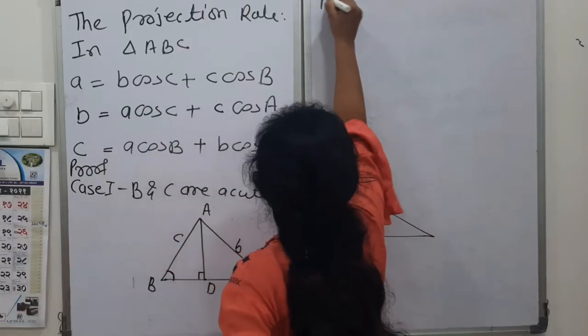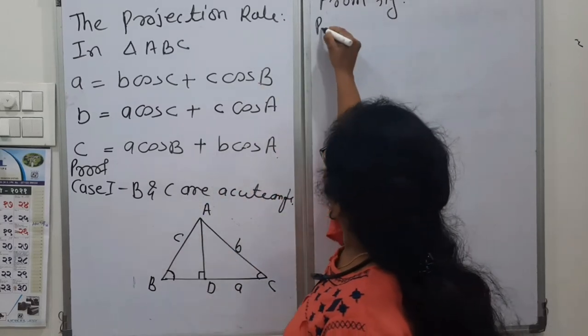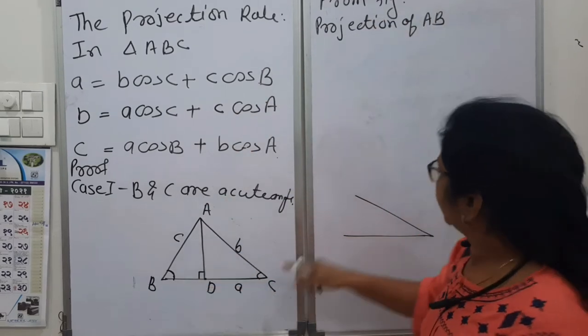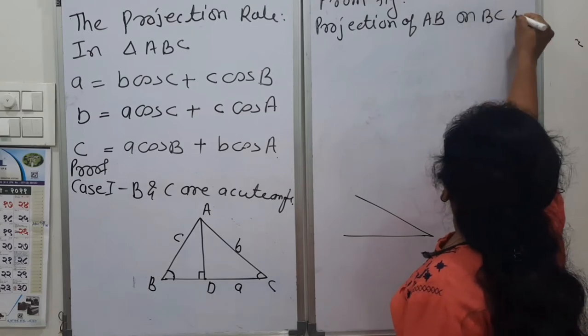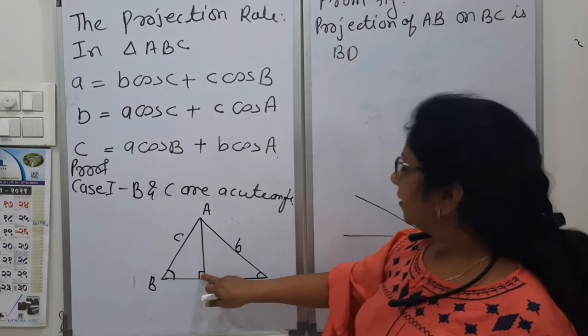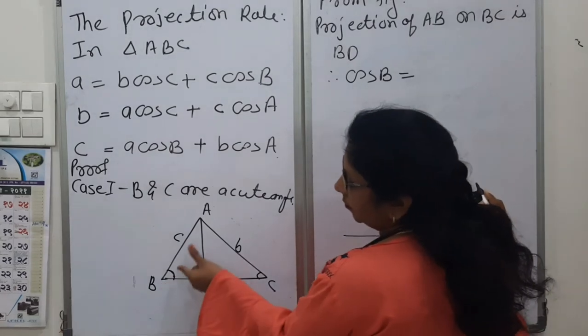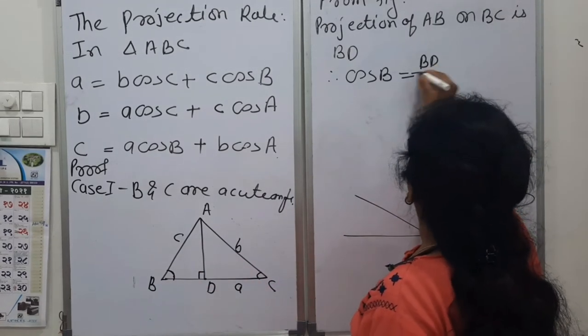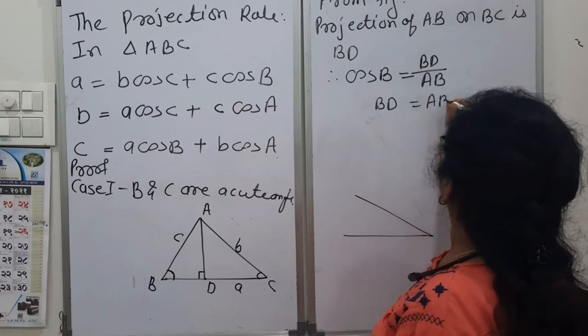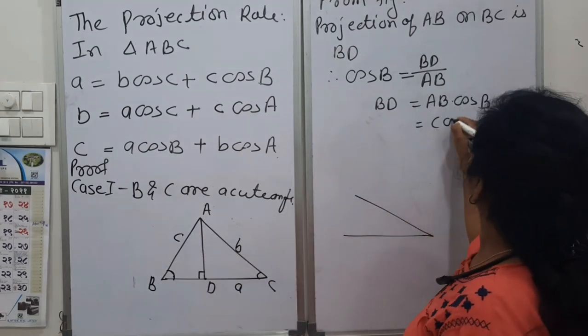So we will write from figure, projection of AB on BC is this BD. And this is an acute angle. This is 90 degrees. Therefore, cos of this B is adjacent upon hypotenuse. That is BD upon AB. We want BD. So BD equals to AB into cos B. But AB we have denoted by c. So c cos B.